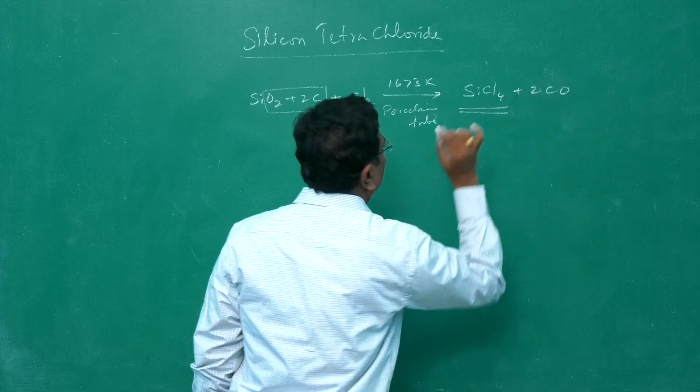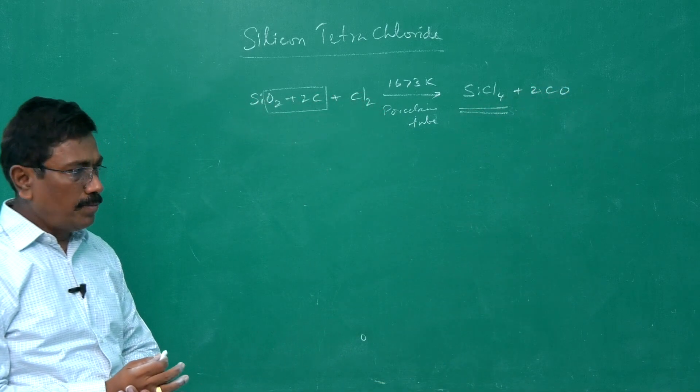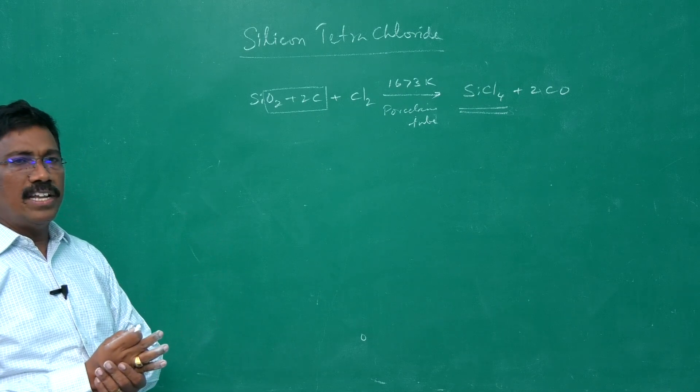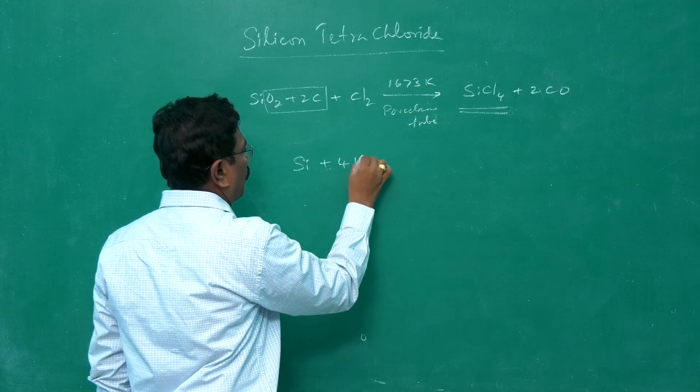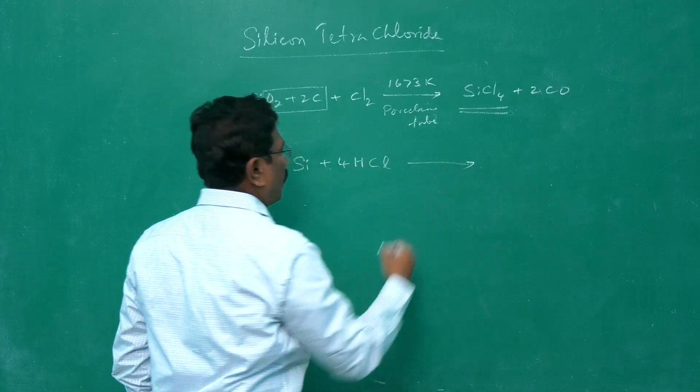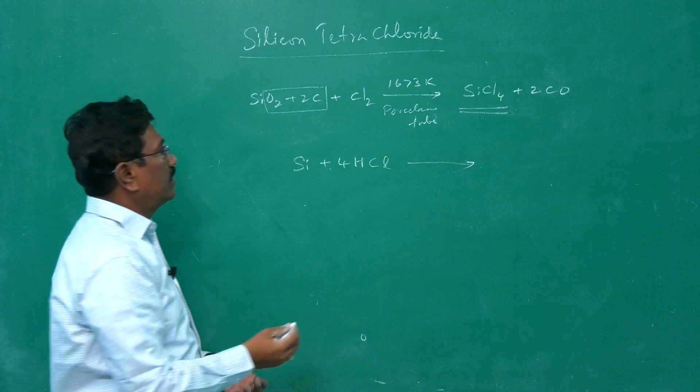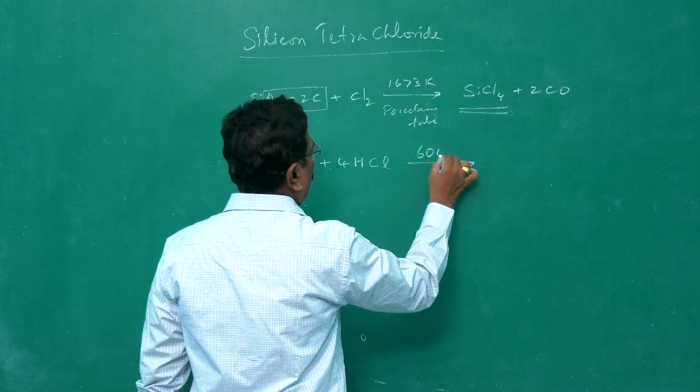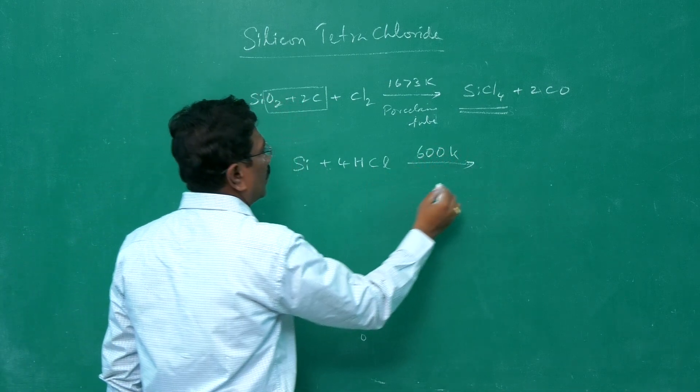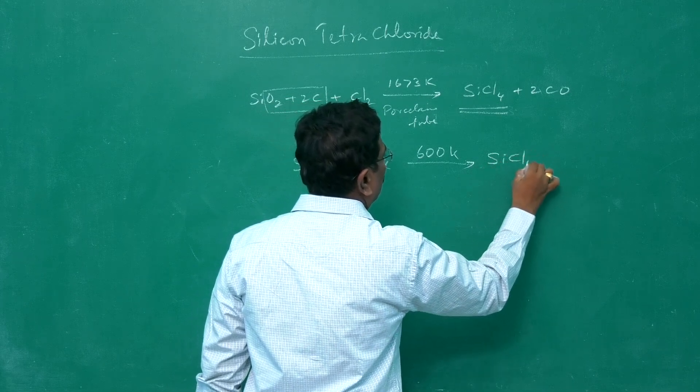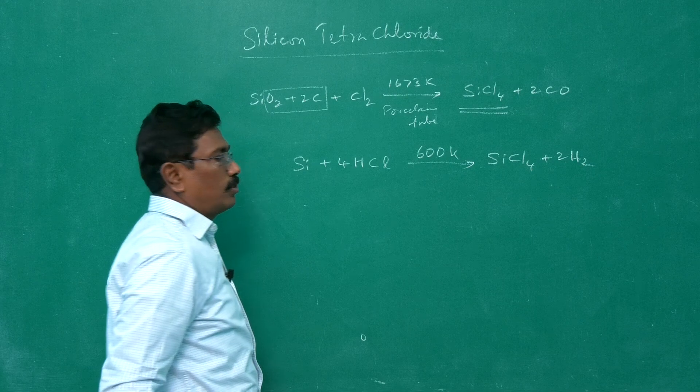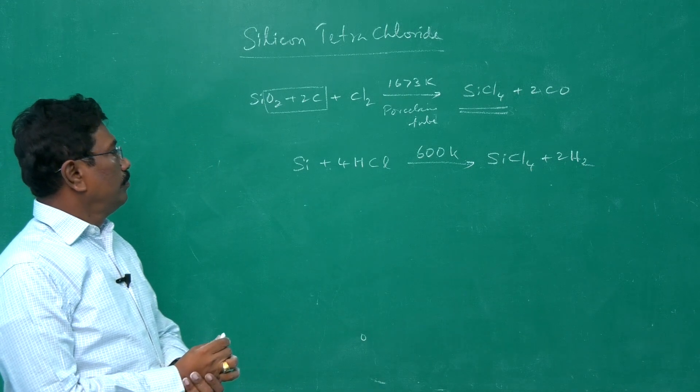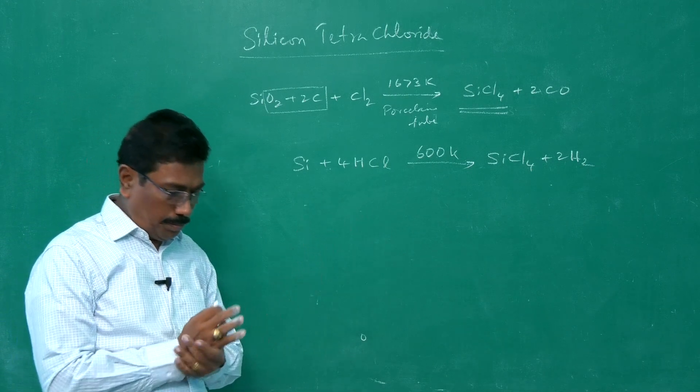This is how silicon tetrachloride is obtained. It can also be produced on a larger scale by the reaction of silicon with HCl. When silicon is made to react with HCl at 600 Kelvin, silicon combines to become silicon tetrachloride with liberation of hydrogen—four hydrogen atoms, therefore 2H2.